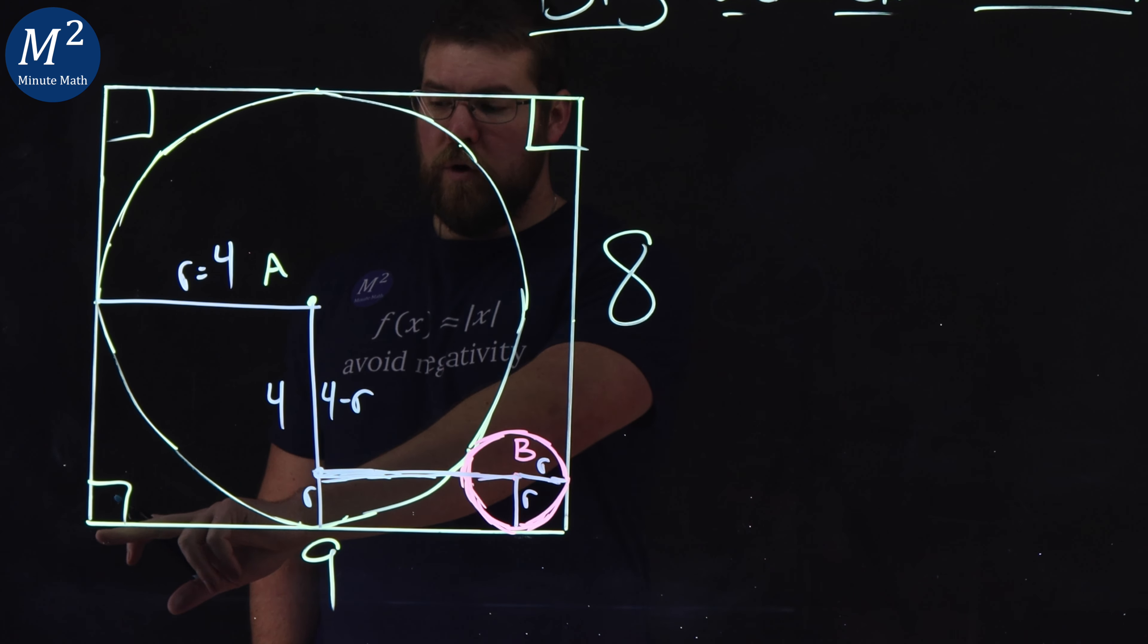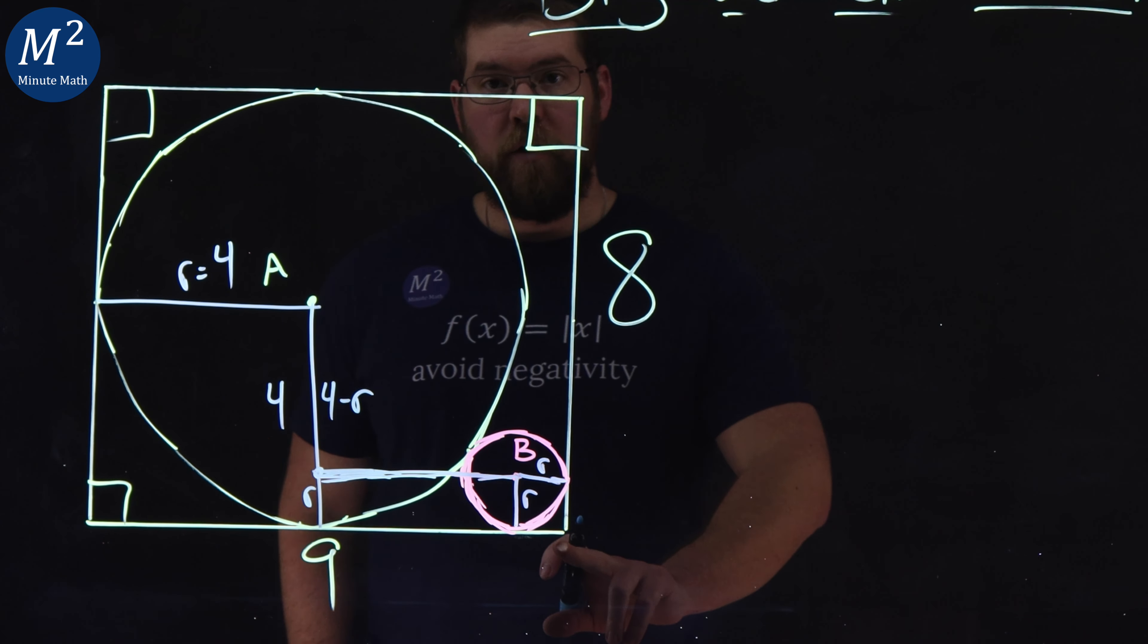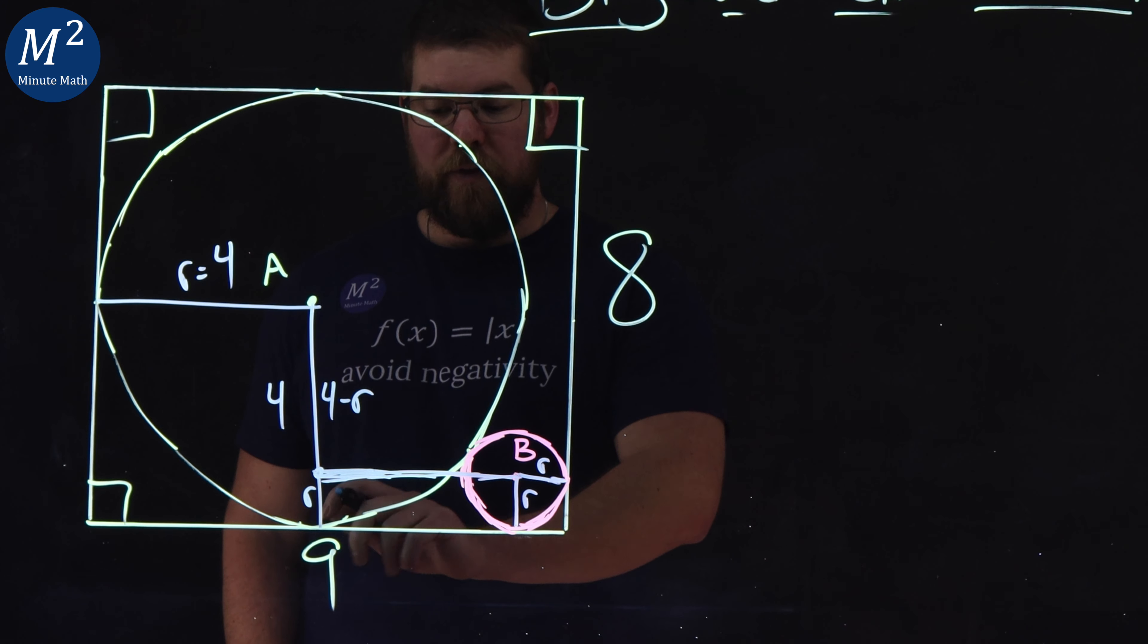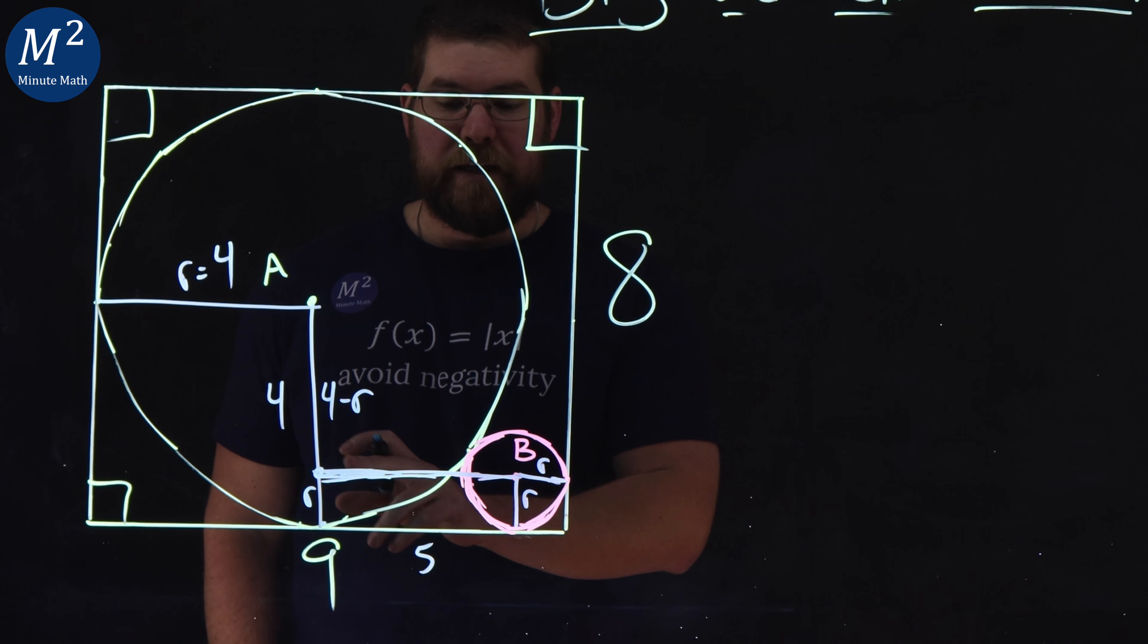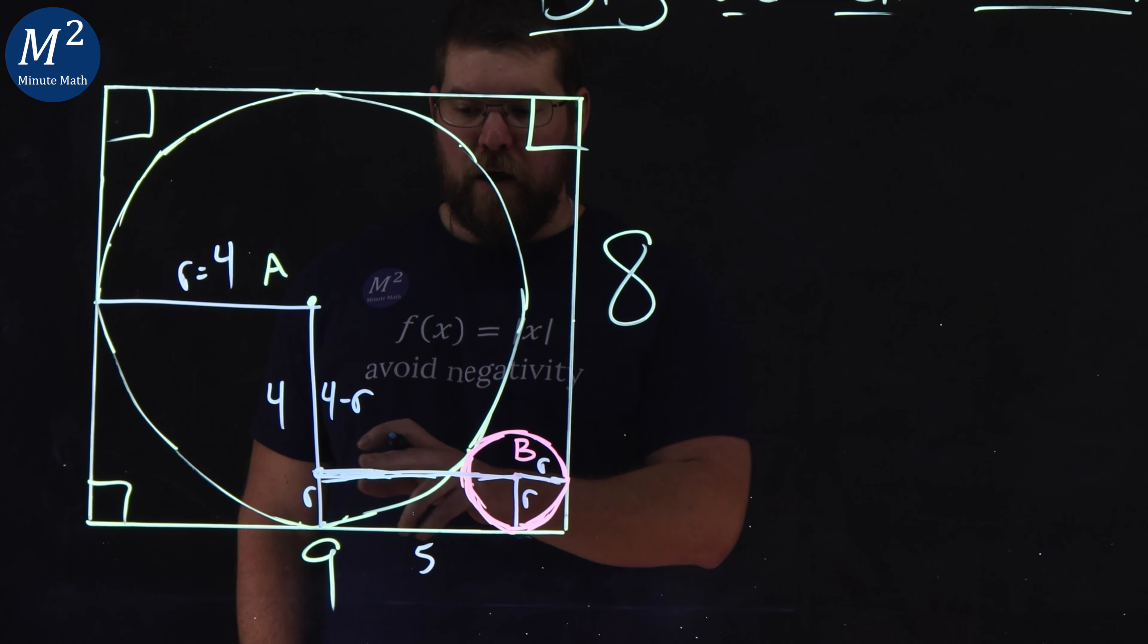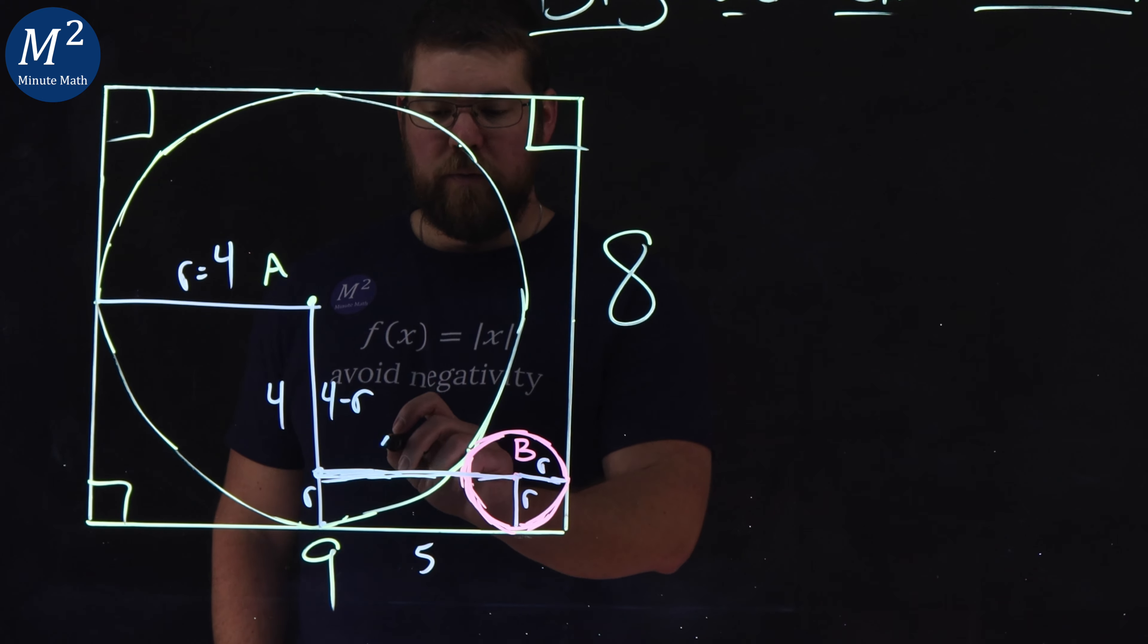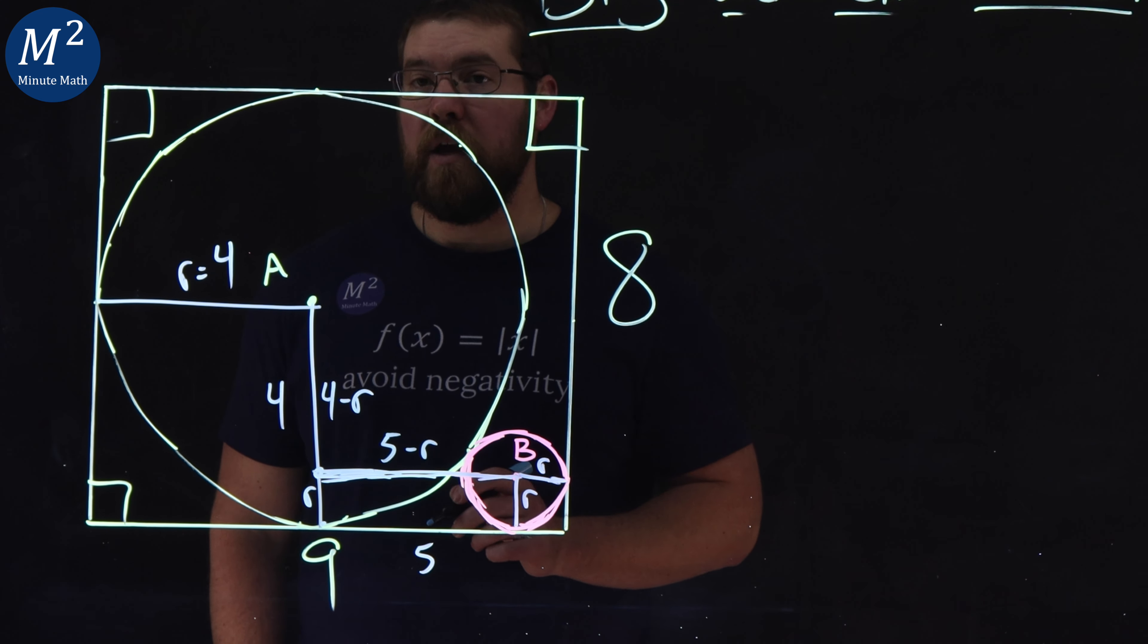And then also, since our overall length here of our bottom of the rectangle is a nine and four goes to this spot right here, that means five is left over. And so the length from here to that spot, that point to this spot here, is five minus the R.